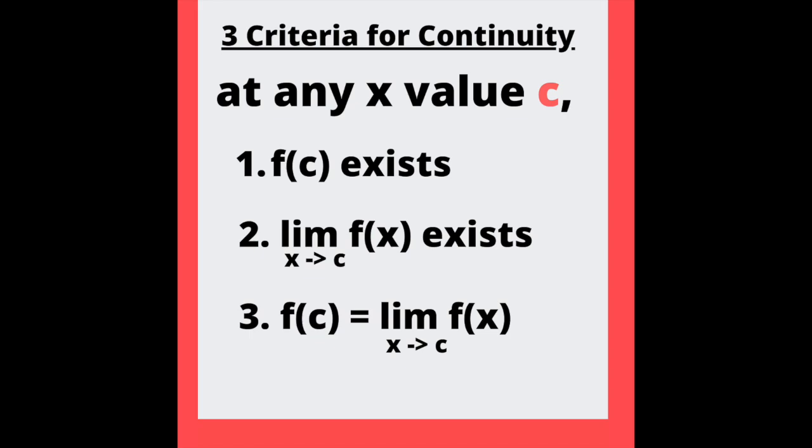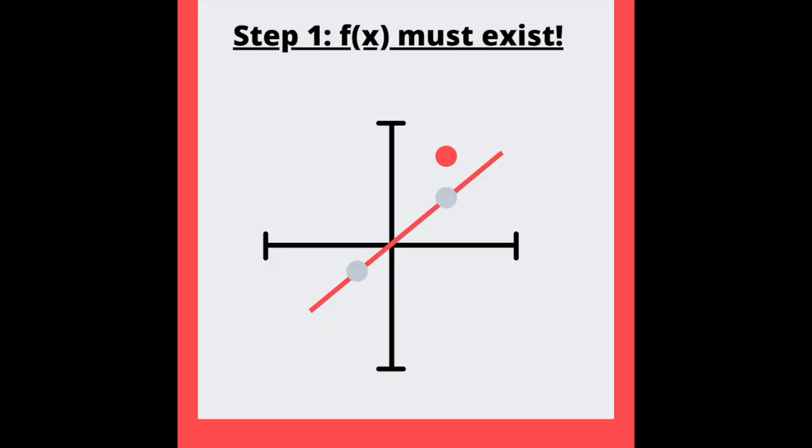There are three ways to show that a point is continuous. Three ways to know that you will ace this on the test. If you are proving continuity, you need to prove all three. If you are proving against, disprove one for victory.